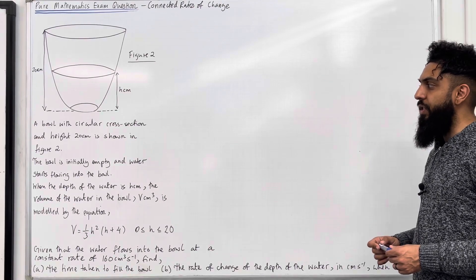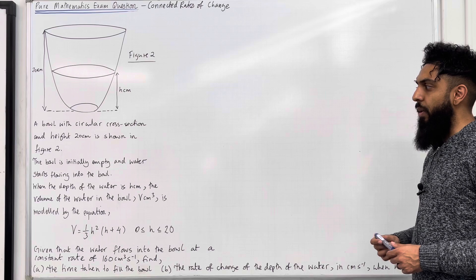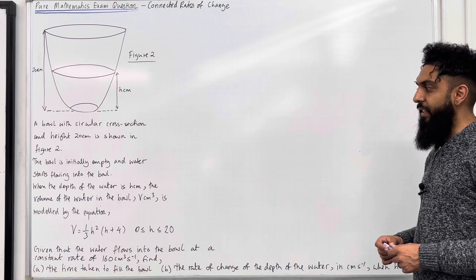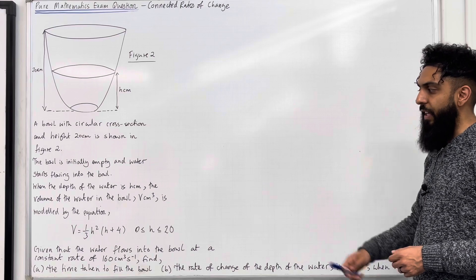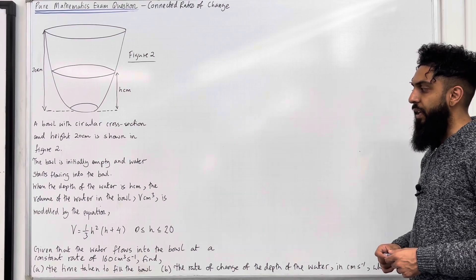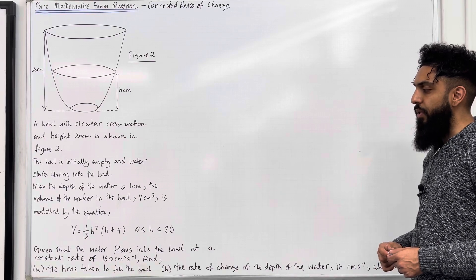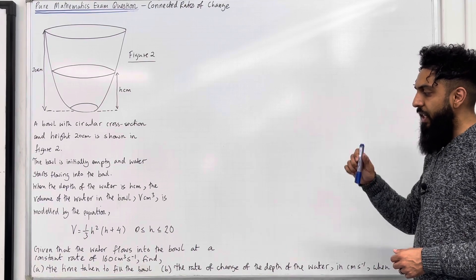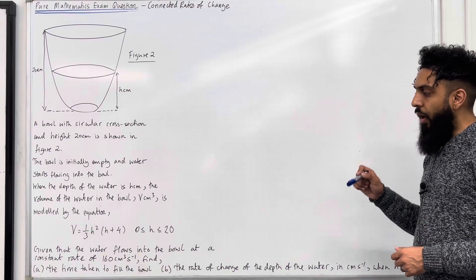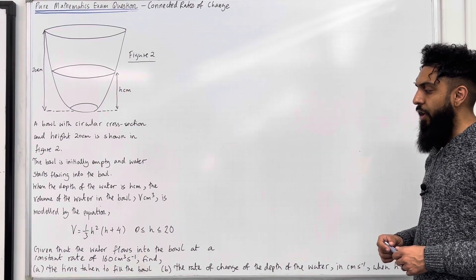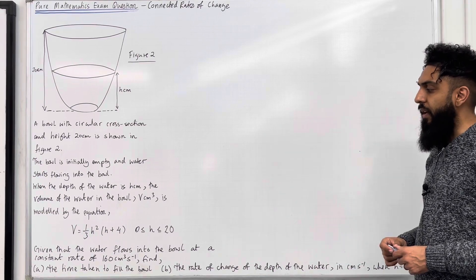Here is the exam question. A bowl with circular cross section and height 20 cm is shown in figure 2. The bowl is initially empty and water starts flowing into the bowl. When the depth of the water is h cm, the volume of the water in the bowl v cm³ is modeled by the equation v equals 1/3 h² multiplied by (h + 4), where h is between 0 and 20. Given that water flows into the bowl at a constant rate, the word rate indicates a differential of 160 cm³ per second, so cm³ per second indicates v over t, volume over time.